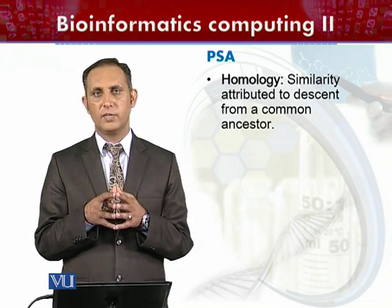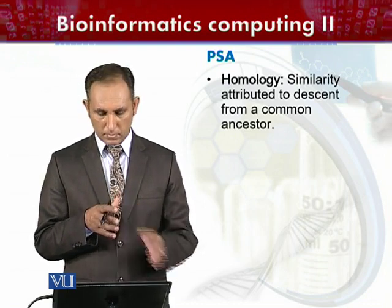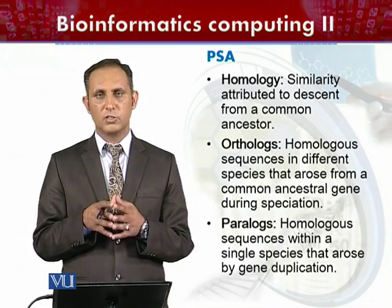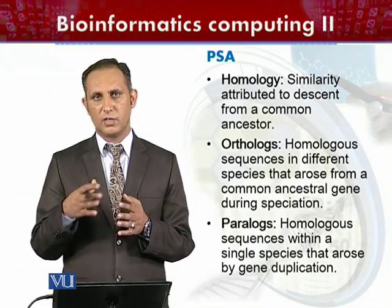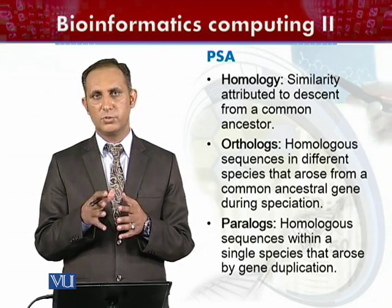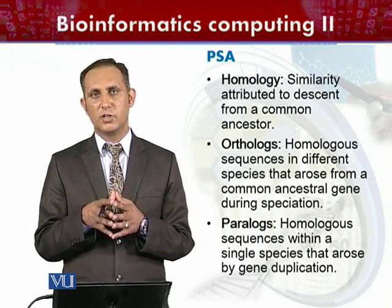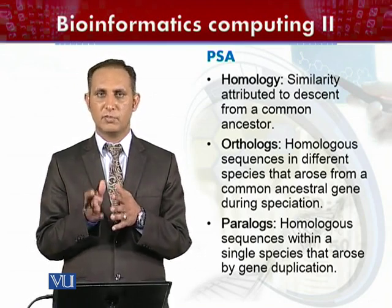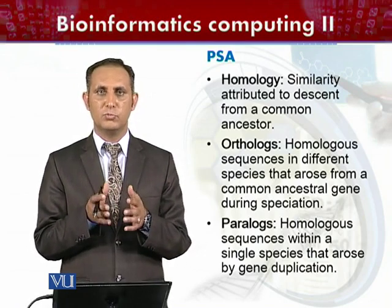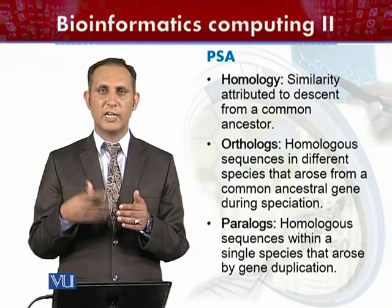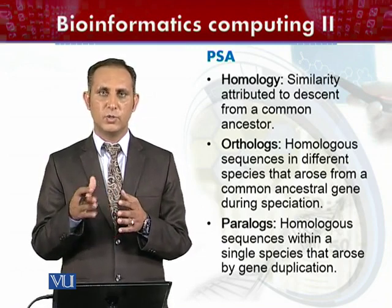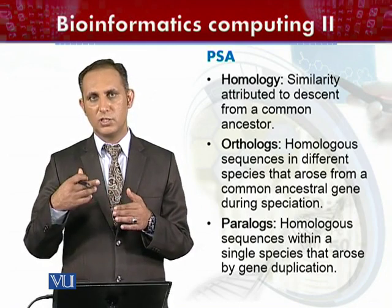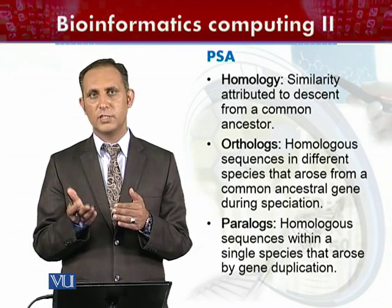Paralogs are homologous sequences found within the same individual, and they arise due to the event of gene duplication. For example, in humans, if a sequence is available in multiple copies, those sequences are paralogs of each other. This is because the gene underwent duplication, resulting in multiple copies within the same individual.